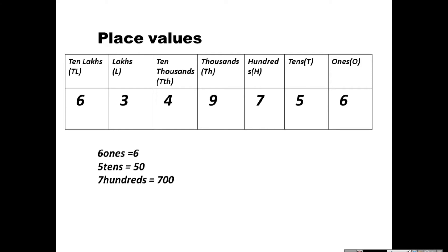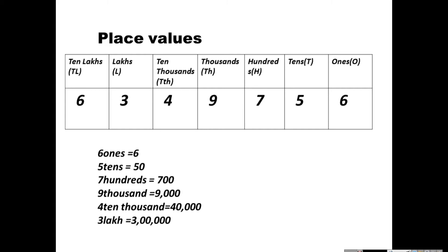9 times 1000s will be 9,000. 4 times 10,000 will be 40,000. 3 times lakhs means 1 lakh, 2 lakh, 3 lakhs — so 3 times lakhs will be 3 lakhs. 6 times 10 lakhs means 10 lakhs, 20 lakhs, 30 lakhs, 40 lakhs, 50 lakhs, 60 lakhs — so 6 times 10 lakhs will be 60 lakhs.